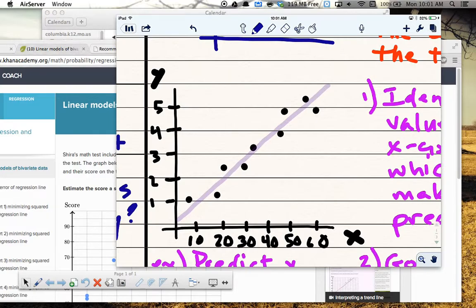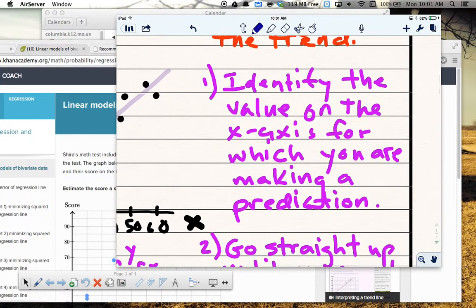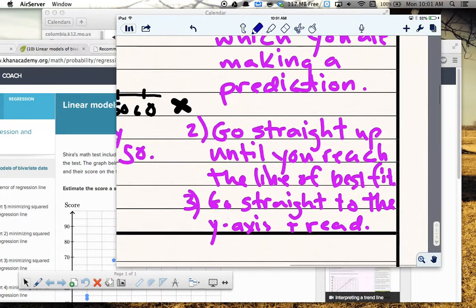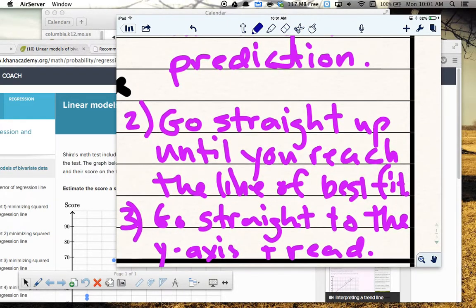There's a couple of steps you have to take. First, you have to identify the value on the x-axis for which you're making a prediction. Second, you go straight up until you reach the line. In some cases, it's down. You go straight up or down until you reach the line of best fit. And then three is go straight to the y-axis and read.